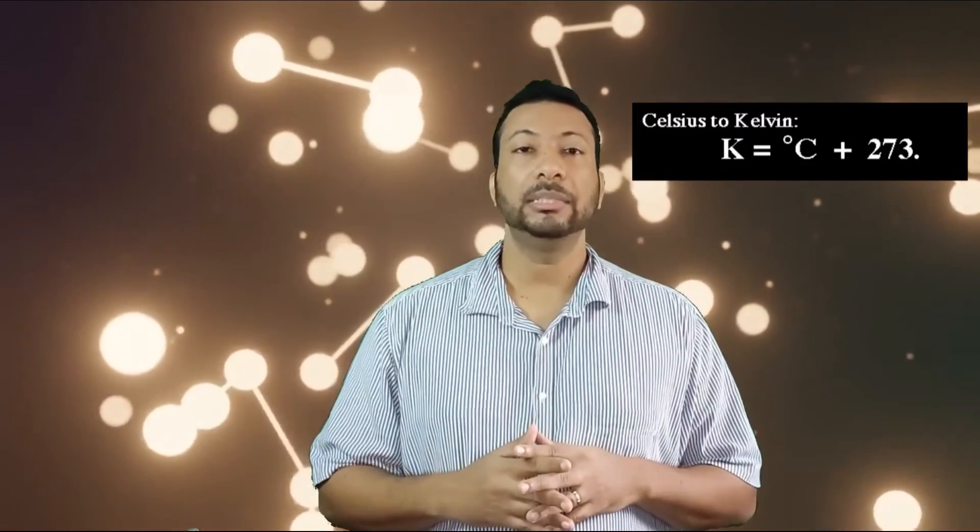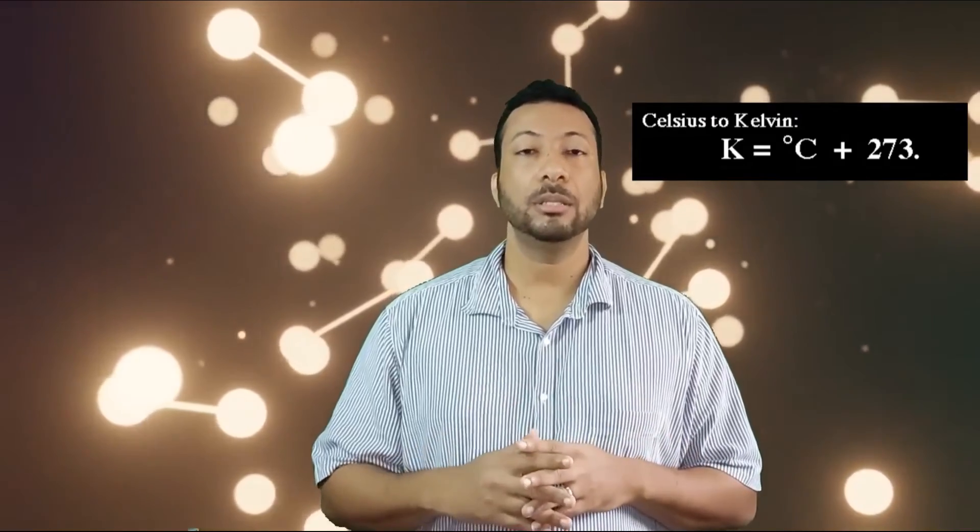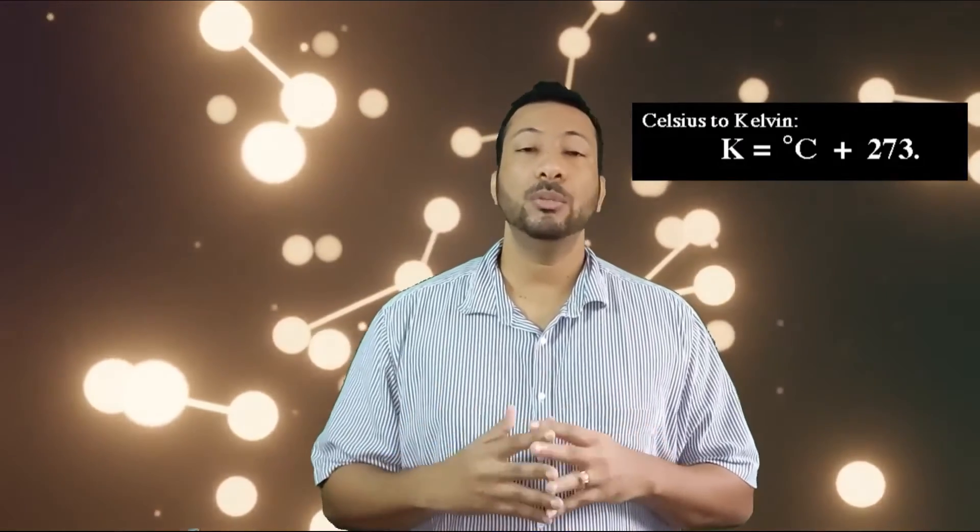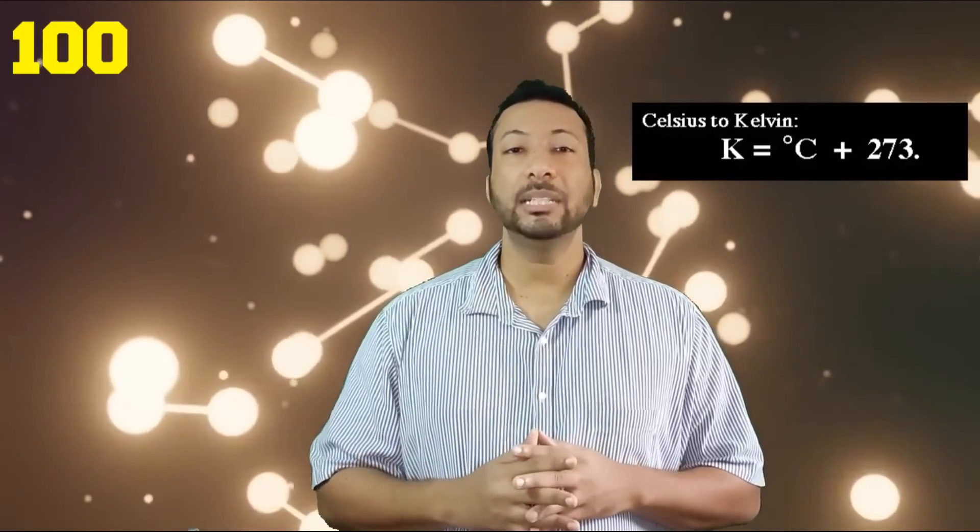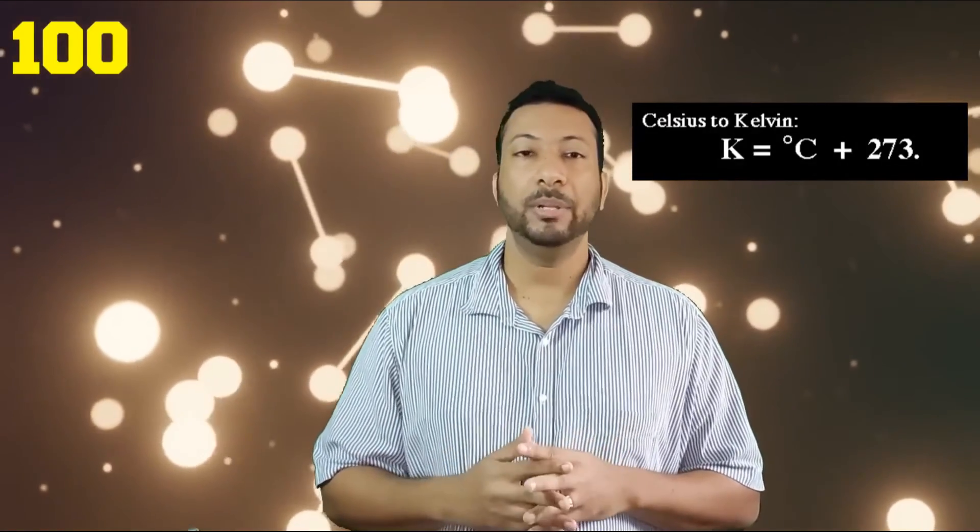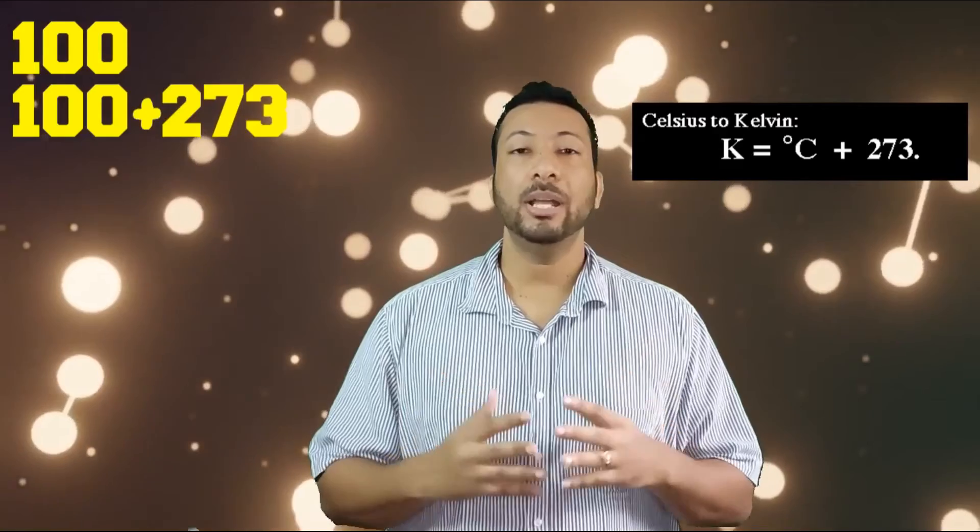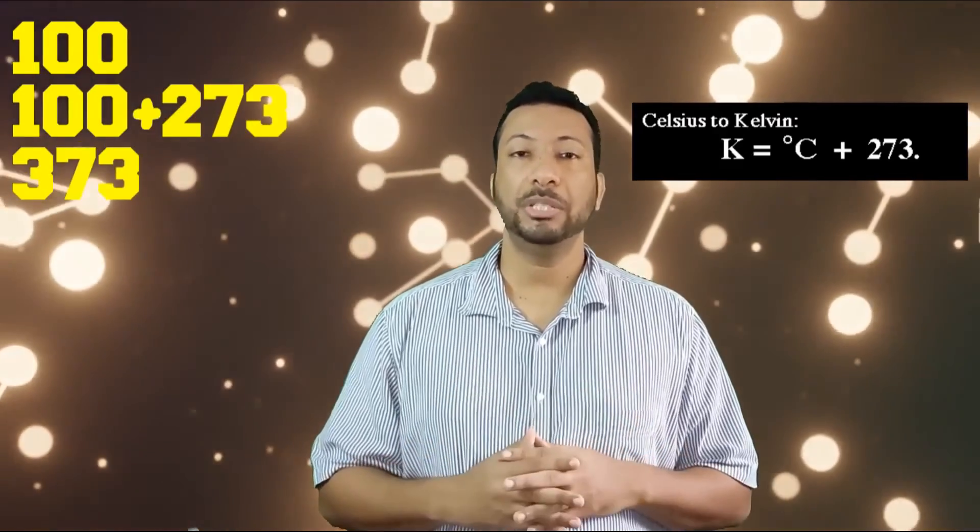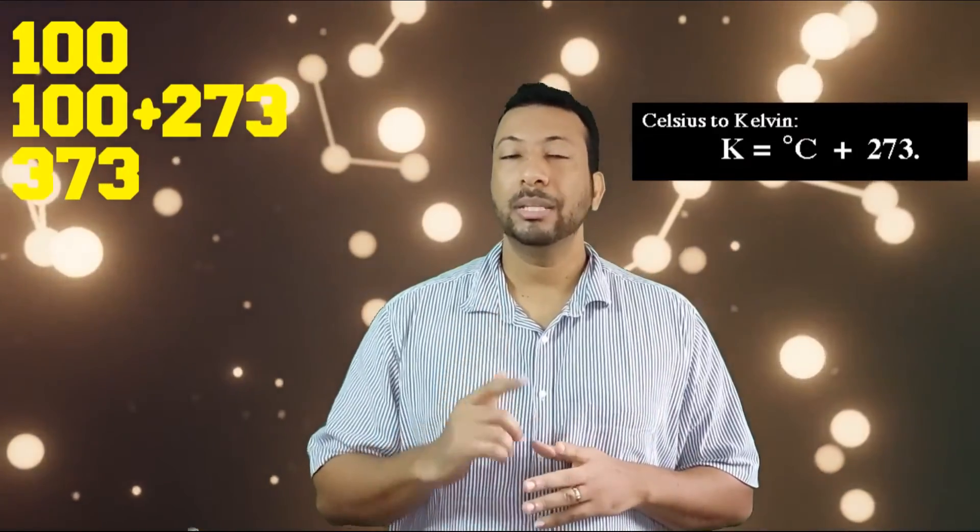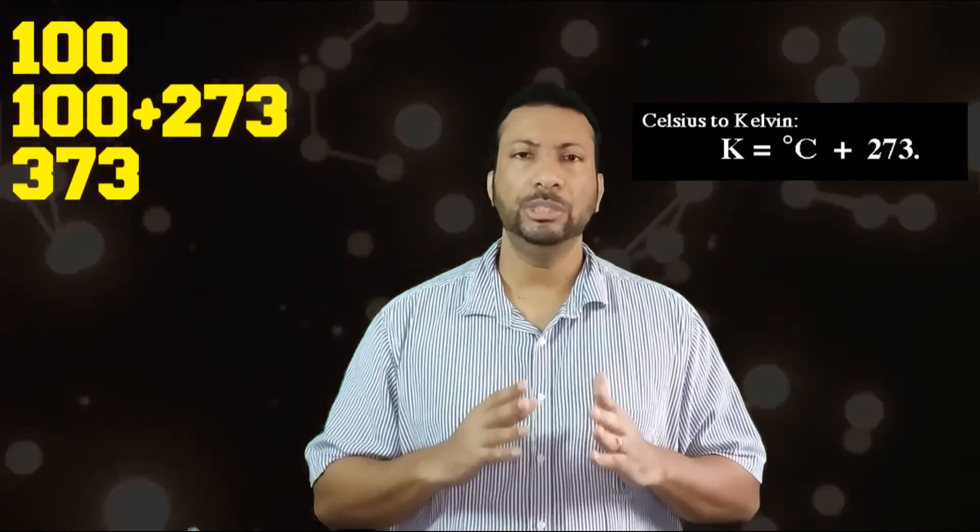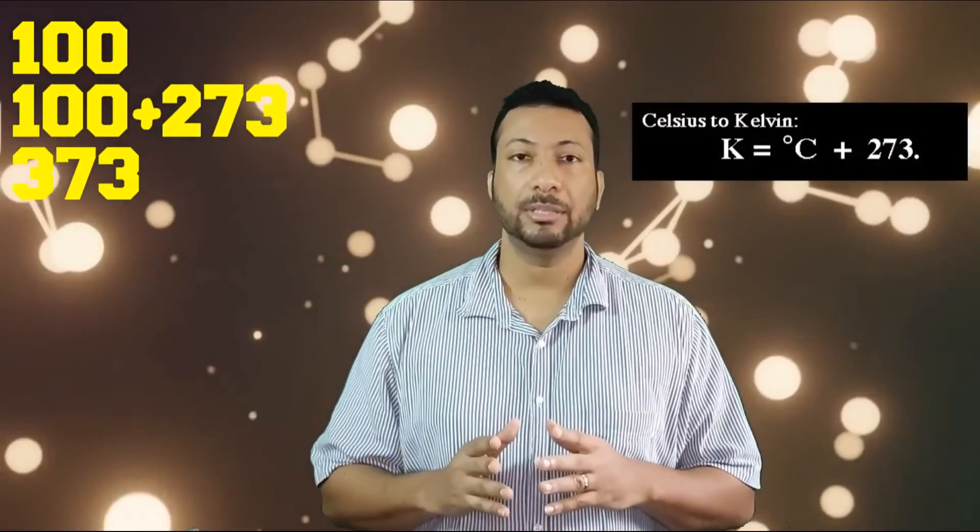So, how do we convert from Celsius to Kelvin? Well, the formula is quite easy. The temperature in Kelvin is equals to the temperature in Celsius plus 273. So, let's say you want to convert 100 degrees Celsius to Kelvin. You would simply add 100 plus 273 and your answer would be 373 Kelvin. Please note, it is not degrees Kelvin. It is simply 373 Kelvins. No degrees symbol. And that is the end of our lesson today. See you in class.